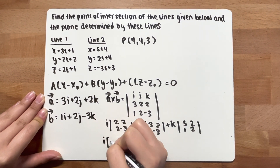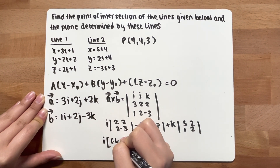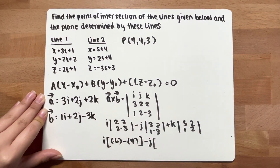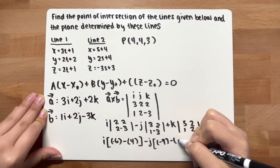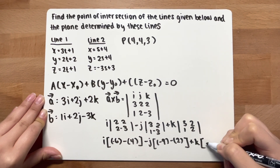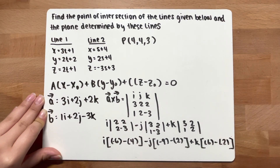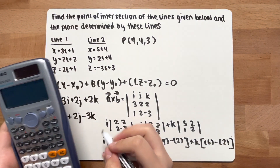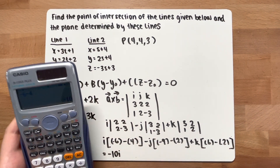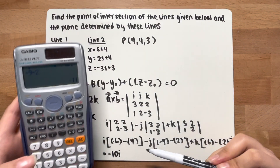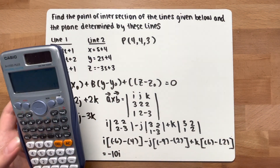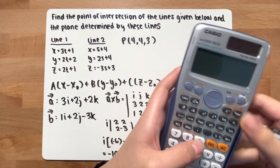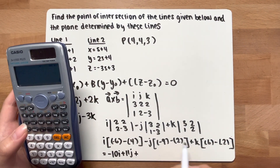Now find the determinant. For i: (-3)(2) - (2)(2) = -6 - 4 = -10, so -10i. For j: (-3)(3) - (2)(1) = -9 - 2 = -11, and since there's a negative sign in front, negative times negative gives positive 11j. For k: (3)(2) - (2)(1) = 6 - 2 = 4, so +4k.